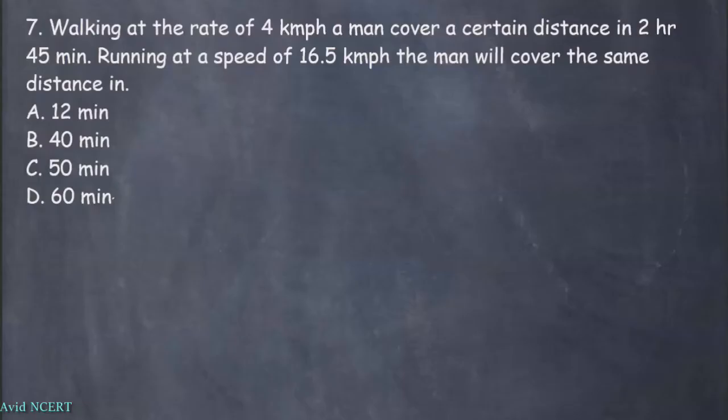Hello viewers, welcome to my channel, this is Geeta. Walking at the rate of 4 kilometer per hour, a man cover a certain distance in 2 hours 45 minutes. Running at a speed of 16.5 kilometer per hour, the man will cover the same distance in. The options are 12 minutes, 40 minutes, 50 minutes, and 60 minutes.